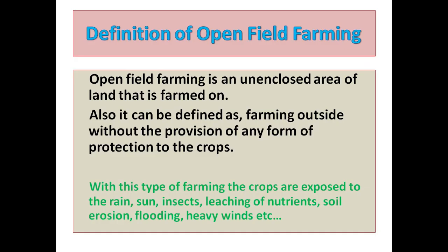Definition of open field farming: open field farming is an unenclosed area of land that is farmed on. It can also be defined as farming outside without the provision of any form of protection to the crops. With this type of farming, the crops are exposed to the rain, sun, insects, leaching of nutrients, soil erosion, flooding, heavy winds, etc.